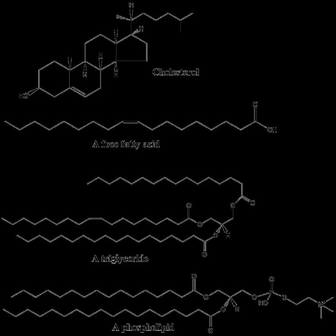Polyketides are synthesized by polymerization of acetyl and propionyl subunits by classic enzymes as well as iterative and multimodular enzymes that share mechanistic features with the fatty acid synthases. They comprise a large number of secondary metabolites and natural products from animal, plant, bacterial, fungal, and marine sources, and have great structural diversity. Many polyketides are cyclic molecules whose backbones are often further modified by glycosylation, methylation, hydroxylation, oxidation, or other processes. Many commonly used antimicrobial, antiparasitic, and anti-cancer agents are polyketides or polyketide derivatives, such as erythromycins, tetracyclines, ivermectins, and antitumor epothilones.